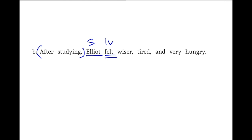The linking verb is going to link to some attributes — in this case, three predicate adjectives, which we will label with PA: wiser, tired, and hungry.